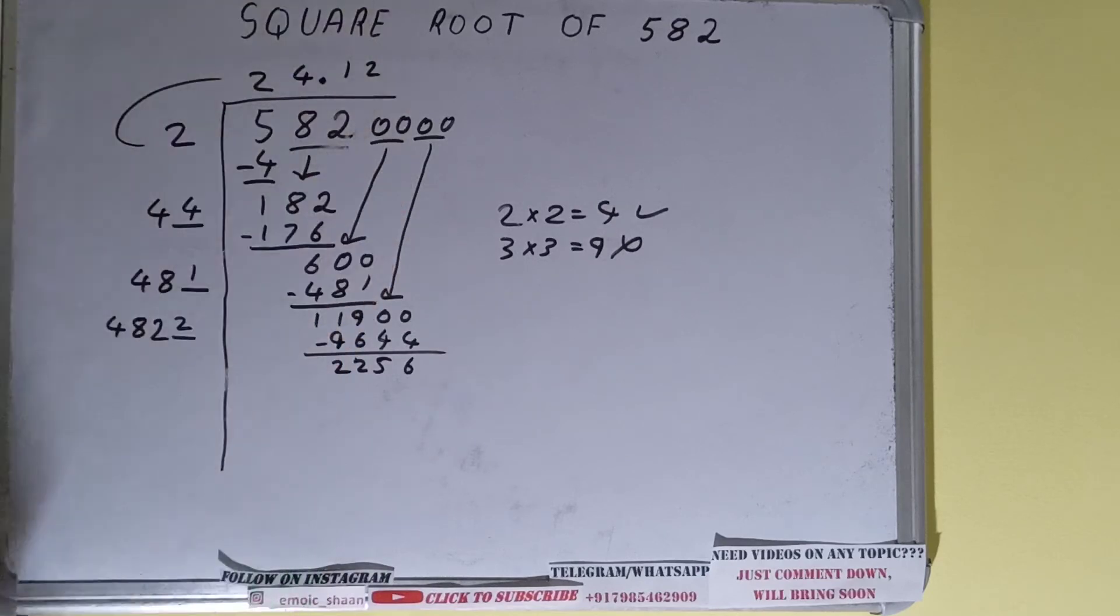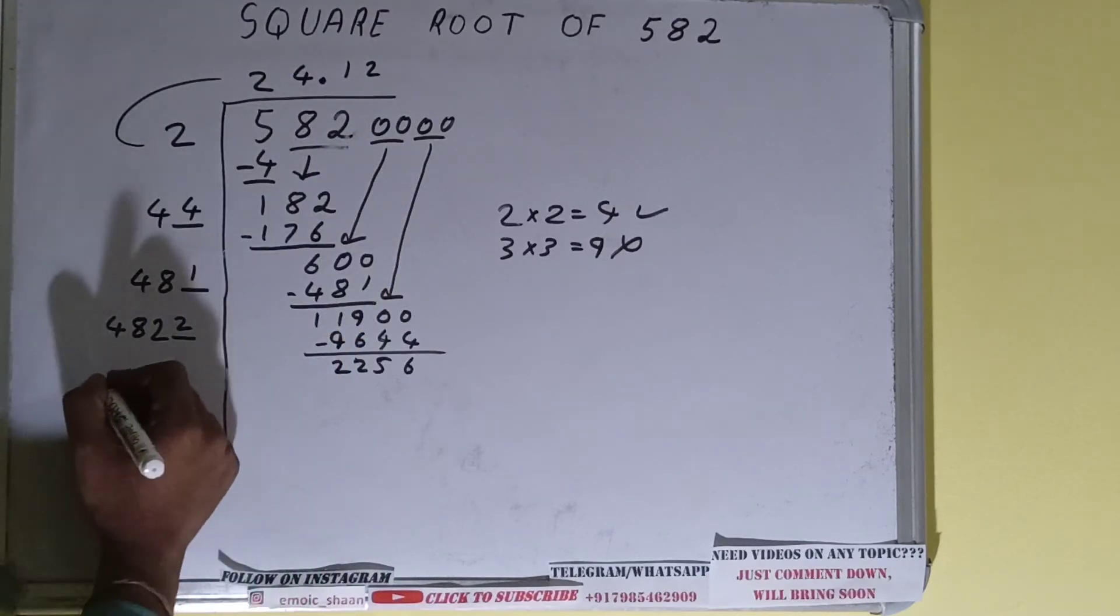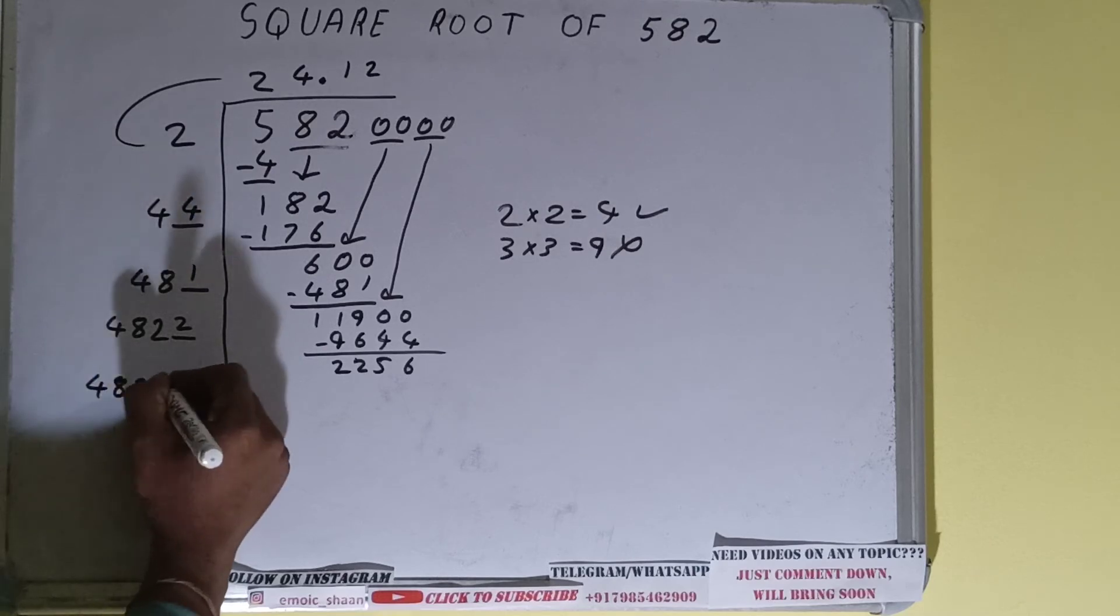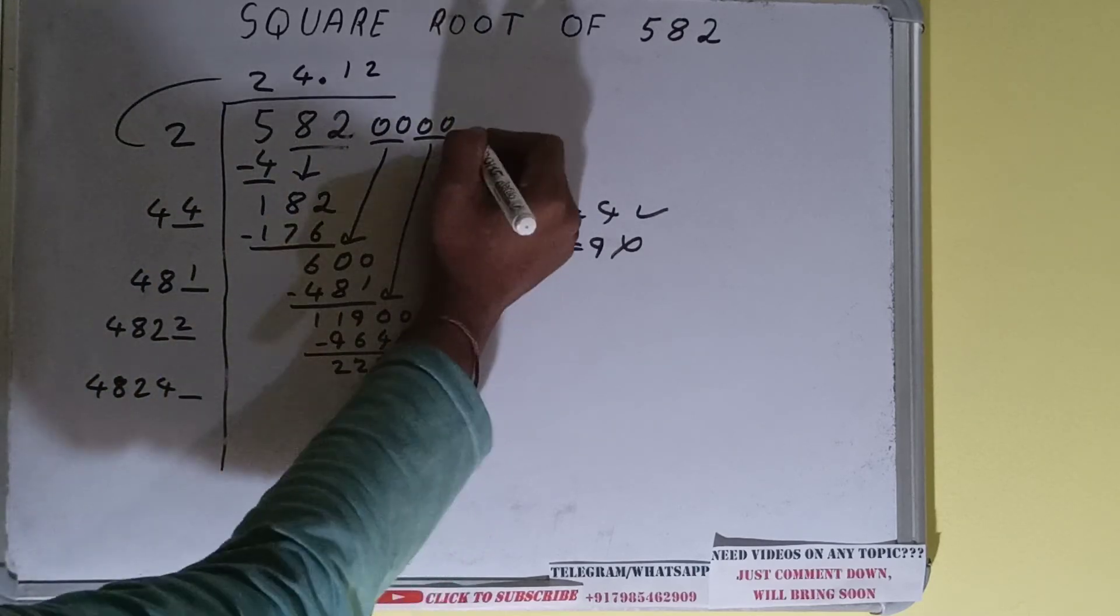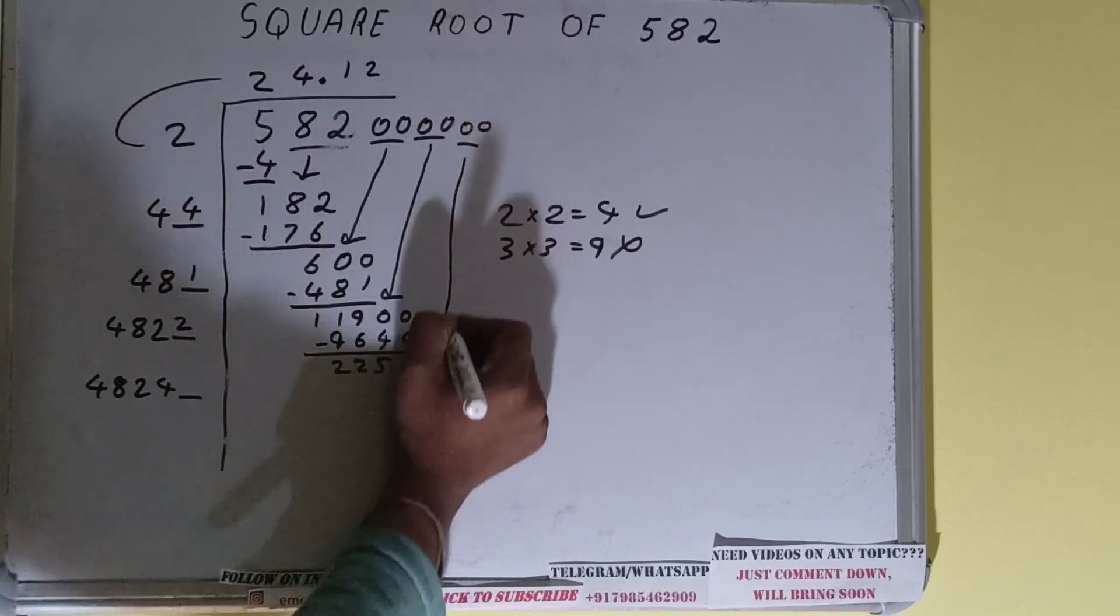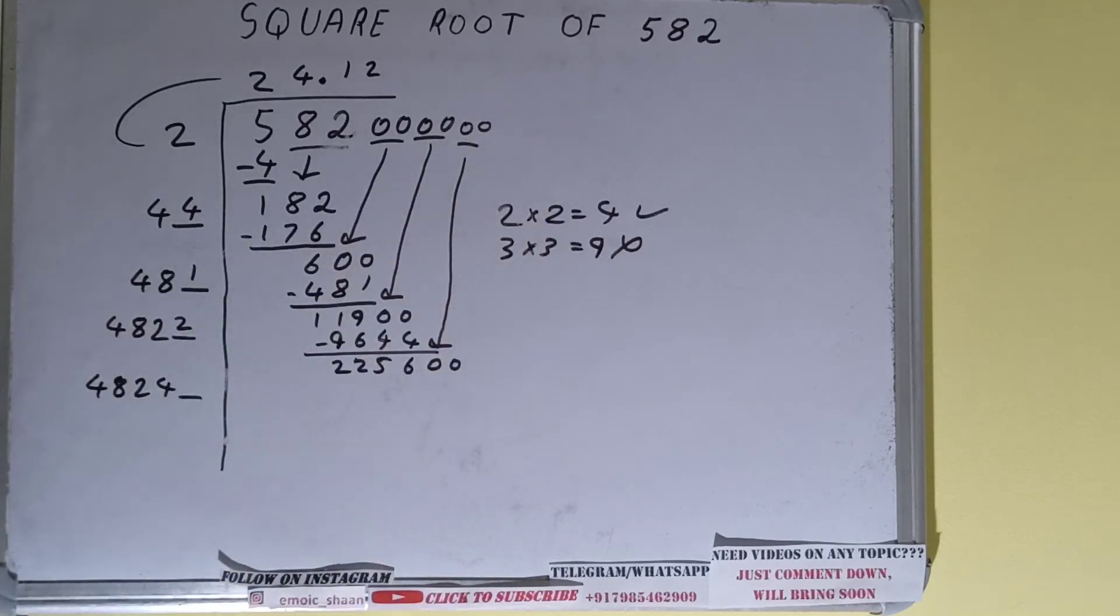Now 4822 times 2 we did. Add both: 4822 plus 2 will be 4824 and 1 digit extra to make this number big. Bring the next pair of zeros down and it becomes 22560.